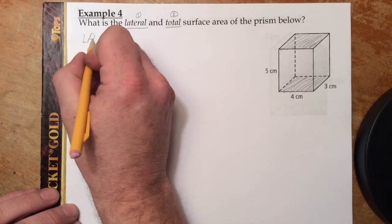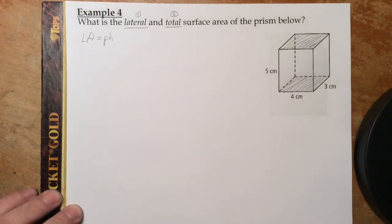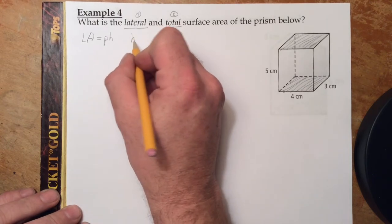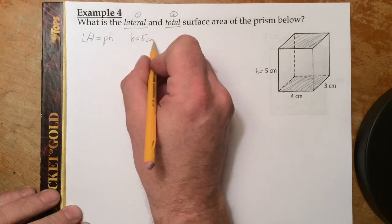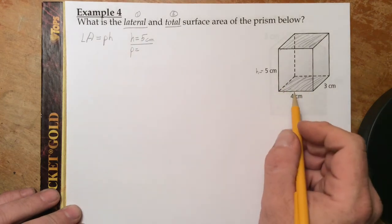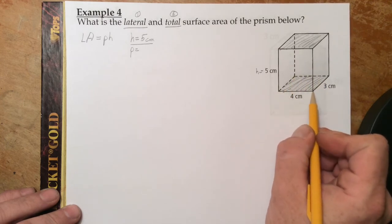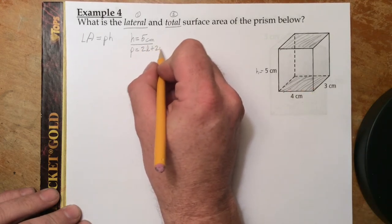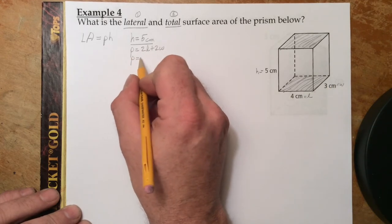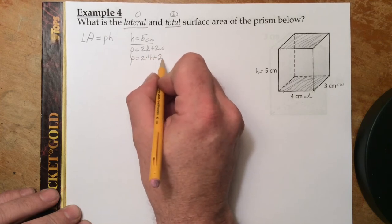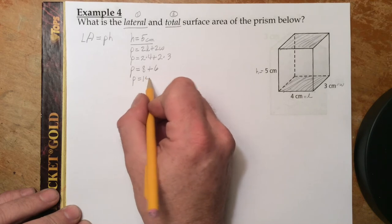Starting with the lateral area: LA = P × H, where P is the perimeter of the base and H is the height of the prism. The height is 5 cm. For the perimeter of the rectangular base, the formula is 2 times the length plus 2 times the width. The length is 4 and the width is 3, so P = 2(4) + 2(3) = 8 + 6 = 14 centimeters.